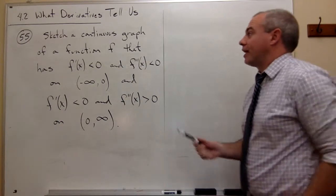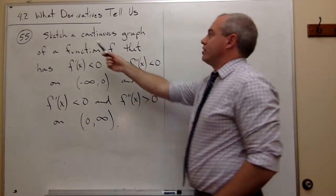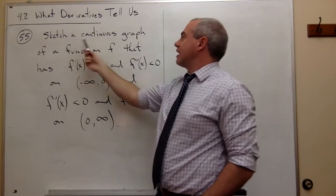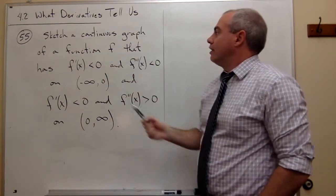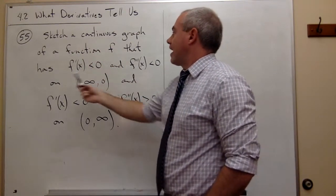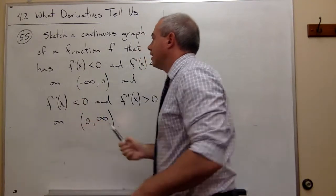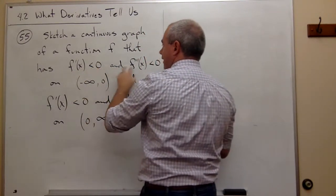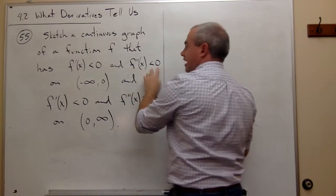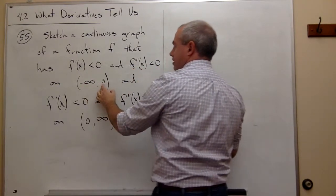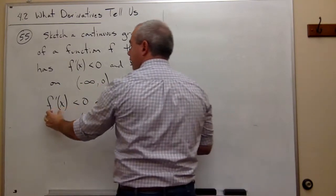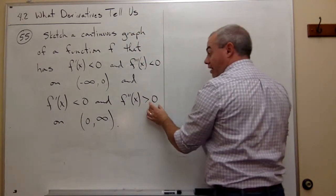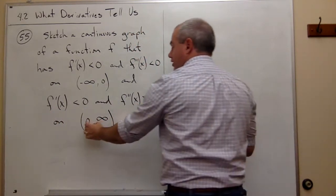In problem number 55, we just want to sketch a graph. Problem 55 says sketch a continuous graph of a function f that has the following properties: f prime of x is negative and f double prime of x is negative from negative infinity to zero, and f prime of x is negative and f double prime of x is positive on zero to infinity.